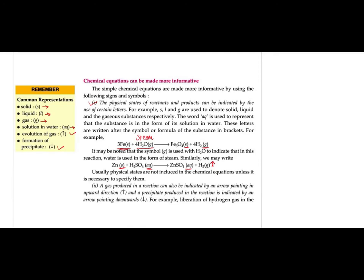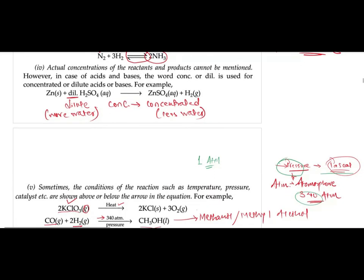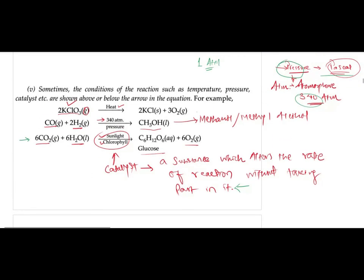So to summarize what we are studying: chemical equations can be made more informative by stating physical states of reactants and products (solid, liquid, gas, aqueous), whether the liquid is dilute or concentrated, using upward arrows for gas evolution, downward arrows for precipitate formation, a double-headed arrow for reversible reactions, and writing conditions such as temperature, pressure, or presence of catalyst above or below the arrow.